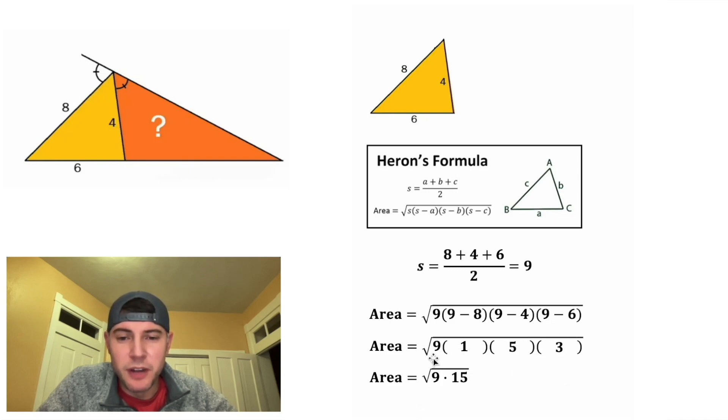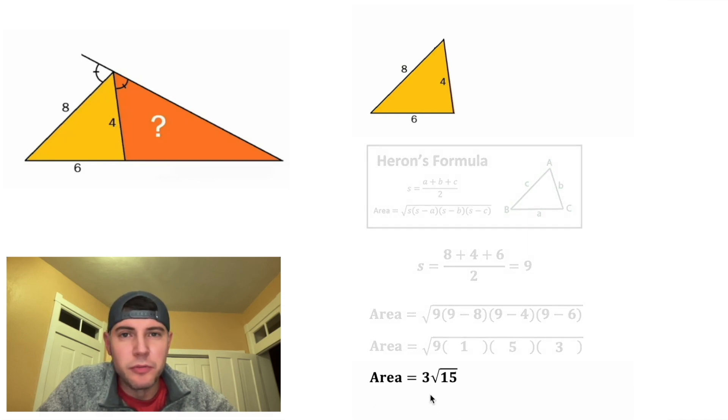So this will equal the square root of 9 times 15. And we can split this up into two separate square roots, square root of 9 times square root of 15. And the square root of 9 is equal to 3, so the area of this triangle is 3 root 15.